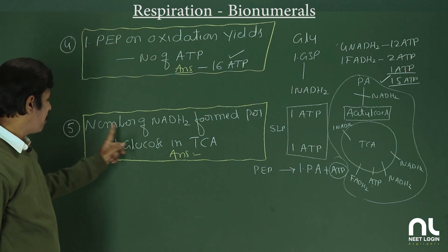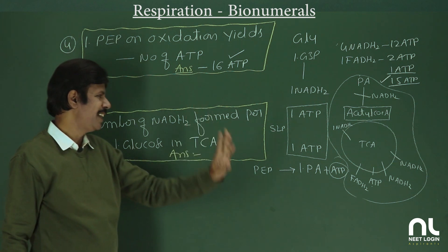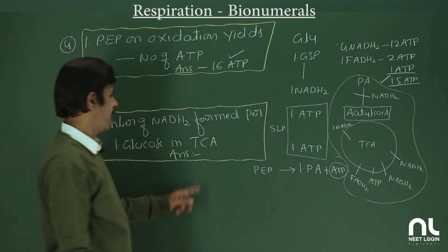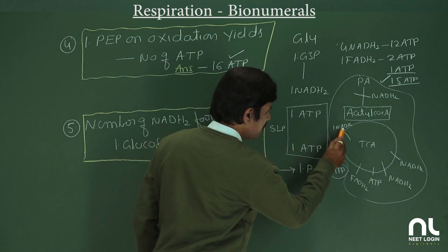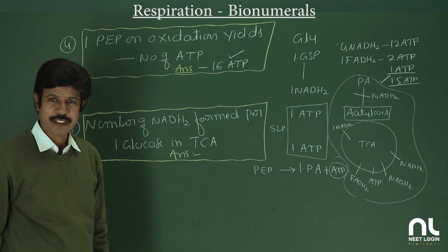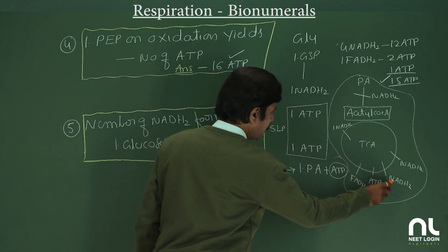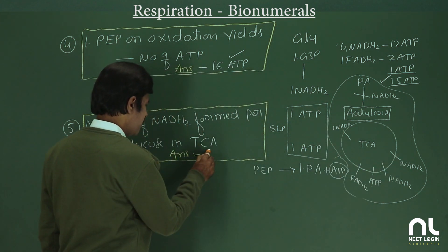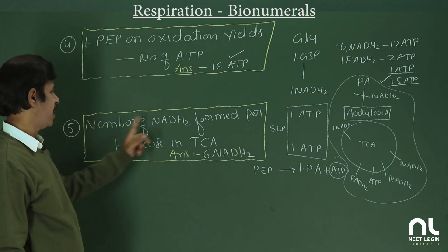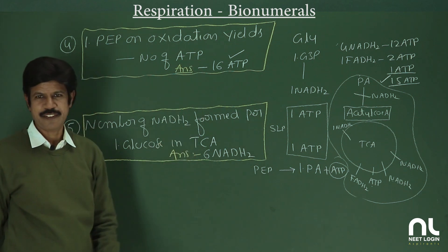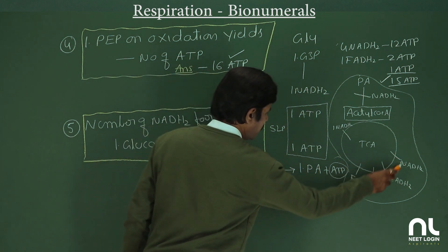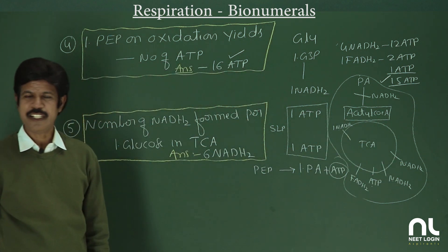Fifth question: how many NADH are formed per 1 glucose in the TCA cycle? For 1 G3P in TCA, 3 NADH are produced. Per 1 glucose there are 2 G3P, so the second G3P also yields 3 NADH — giving a total of 6 NADH. Two turns of the Krebs cycle give 3 + 3 = 6 NADH per glucose.